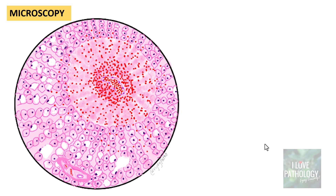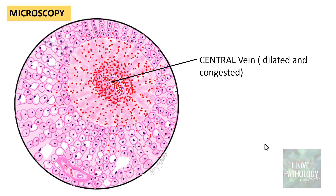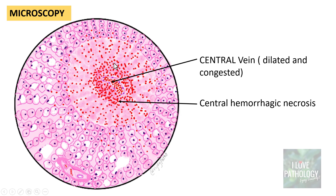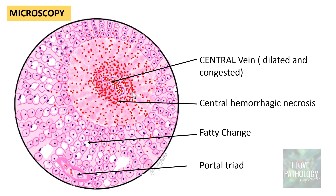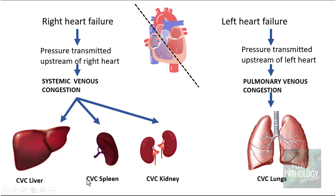Microscopically, there will be a central vein that is dilated and congested, resulting in central hemorrhagic necrosis. The hemorrhagic necrosis is particularly in the centrilobular zone around the central veins. You can find fatty change in the mid-zonal hepatocytes, and the peripheral zones are relatively normal, where you find the portal triad. This is the characteristic microscopic feature of chronic venous congestion of the liver.